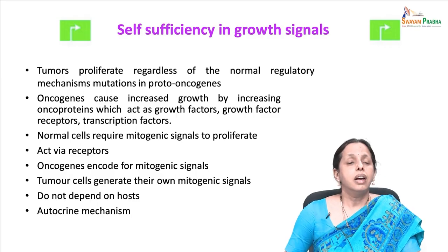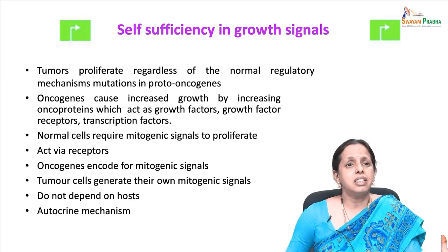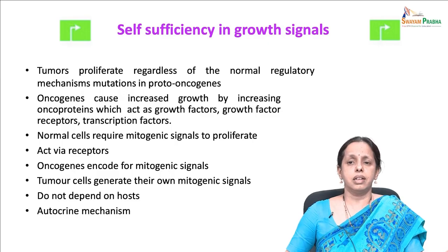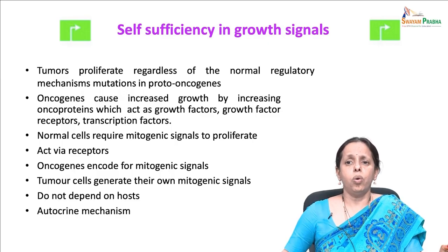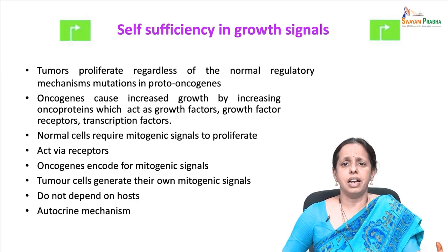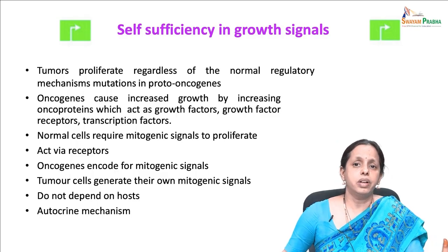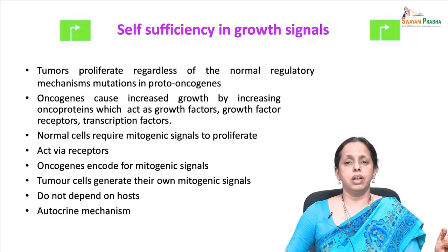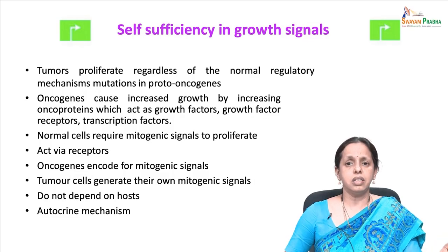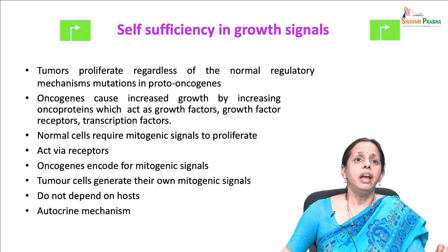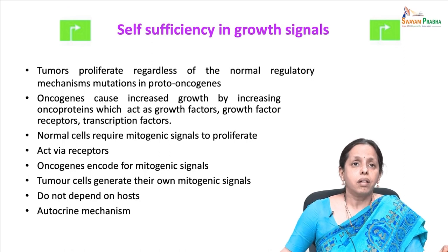These stromal cells then reciprocate by supplying the cancer cells with various growth factors and mitotic signaling. Also, this whole signaling system can be deregulated by elevating the level of receptors. Growth factor receptor proteins are very important in this particular hallmark of cancer.